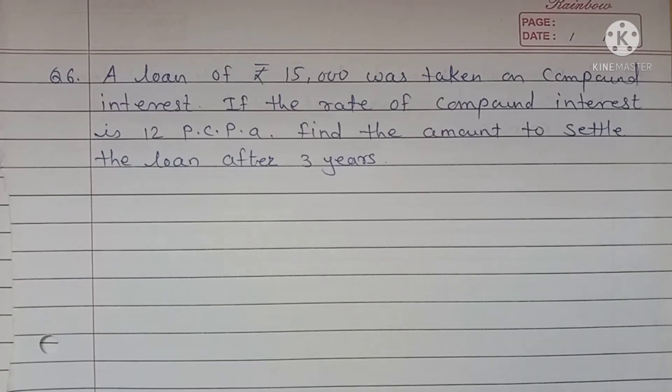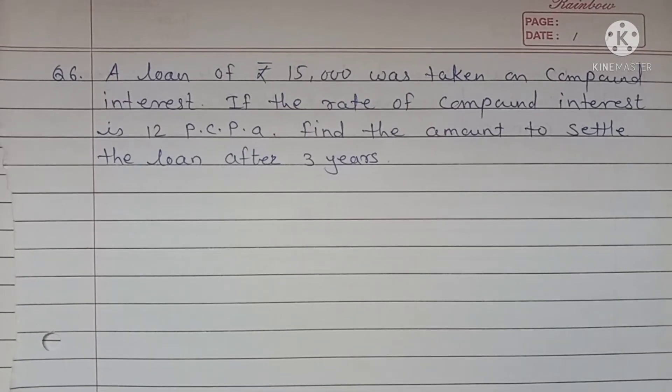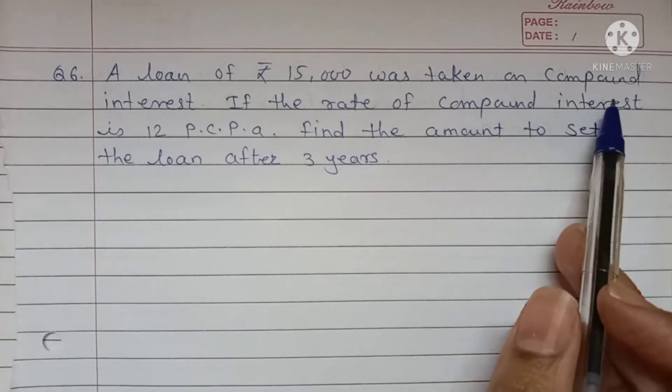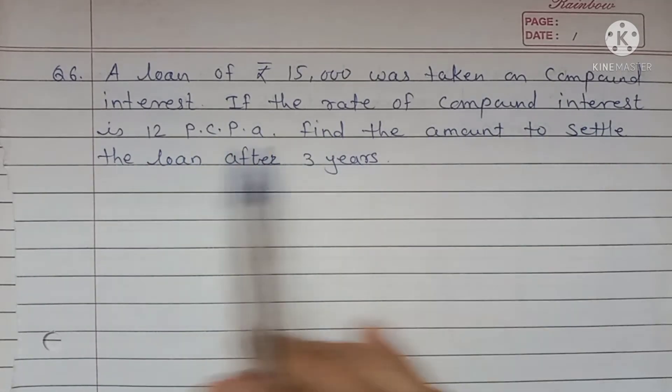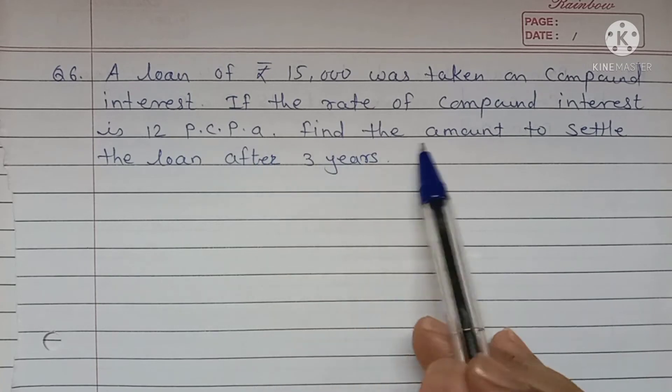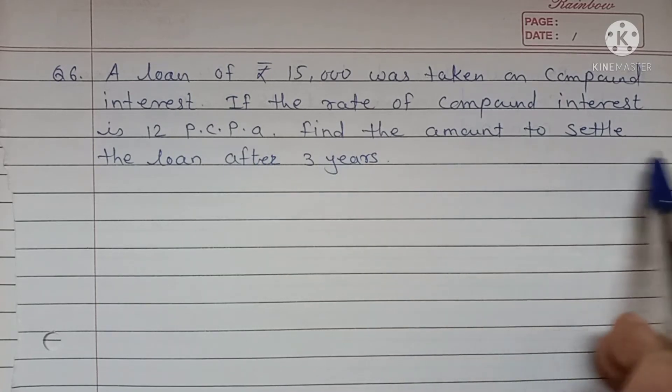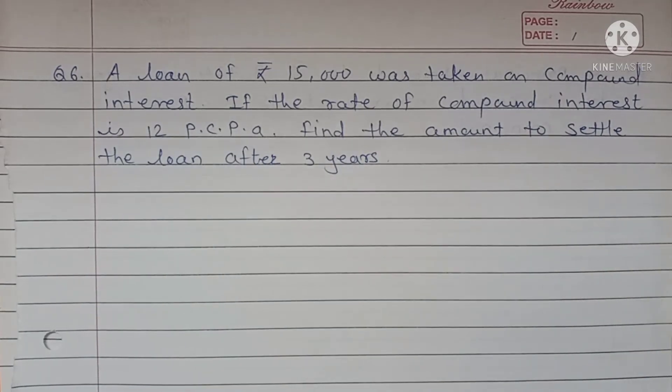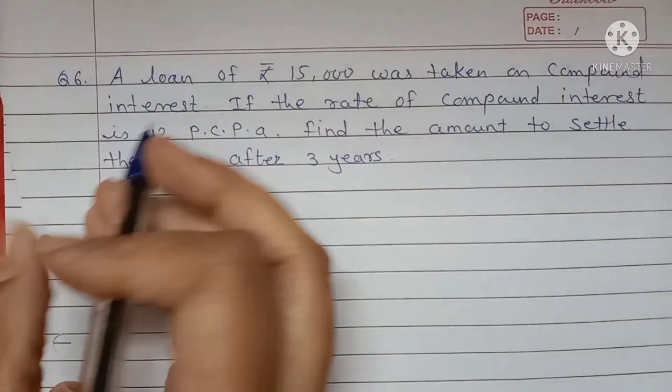Number 6. A loan of rupees 15,000 was taken and compound interest. If the rate of compound interest is 12 PCPA, find the amount to settle the loan after 3 years.